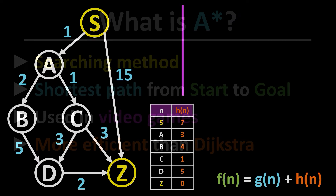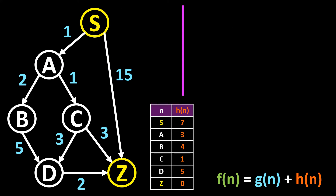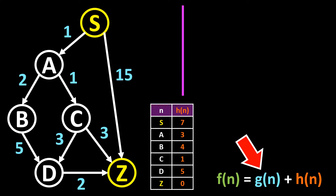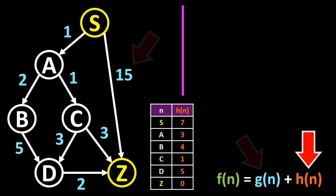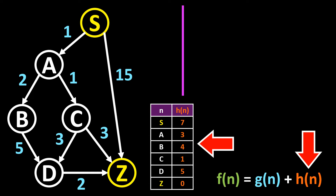We will apply the algorithm to this graph here. Our goal is to find the shortest or cheapest path from the start node S to the destination node Z. G describes the cost of the path from the start node to the current node N — the actual costs of getting from the starting point to N, calculated by adding all the blue values on the path. H are the estimated costs from the current node N to the destination node, a heuristic whose estimated values are given in this table. F of N is the sum of G and H: the path cost from start to current node N plus the estimated costs from N to the target node.